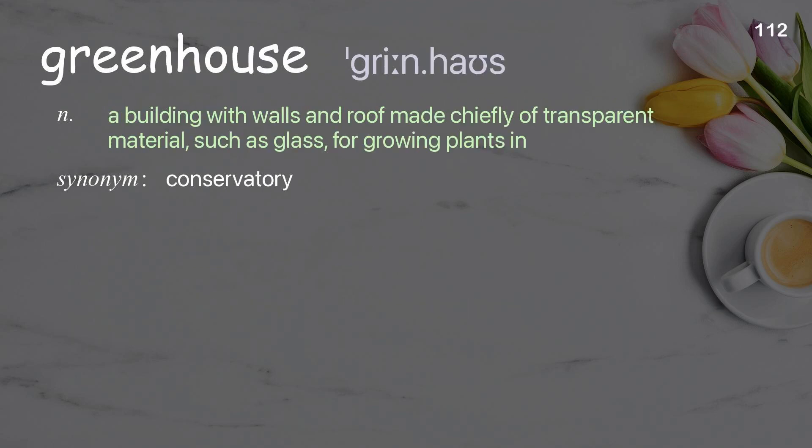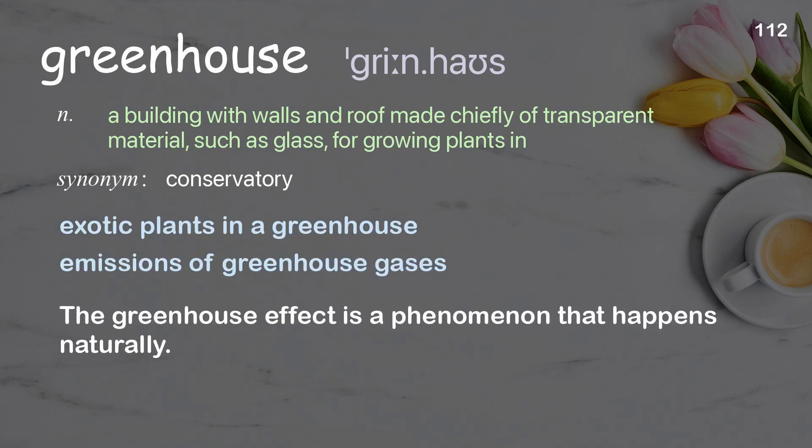Greenhouse: a building with walls and roof made chiefly of transparent material, such as glass, for growing plants. Examples: exotic plants in a greenhouse, emissions of greenhouse gases. The greenhouse effect is a phenomenon that happens naturally.